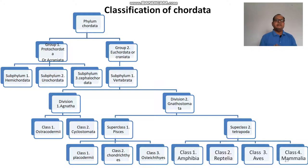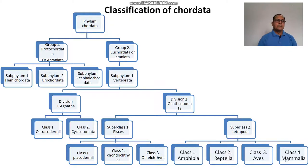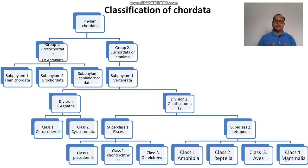For the sake of convenience, Chordata may be divided into two groups. Group one is Protochordates and group two is Eucordates. Protochordates are further divided into three subphyla — Hemichordata, Urochordata, and Cephalochordata — and group two, Eucordata or Craniata, includes the vertebrates.